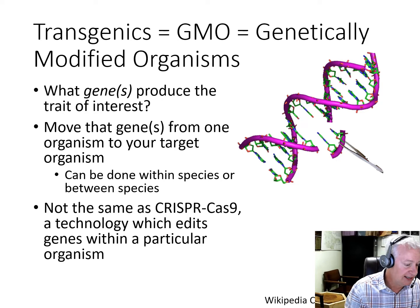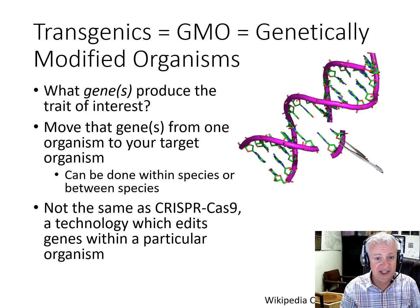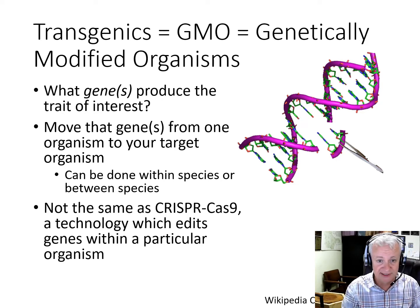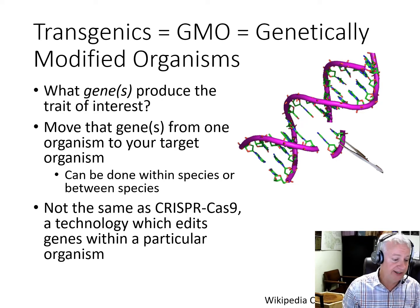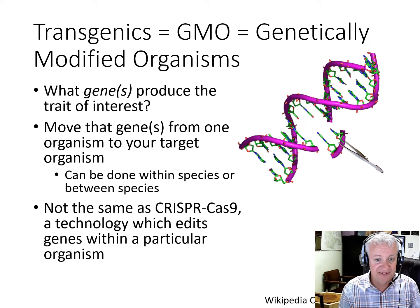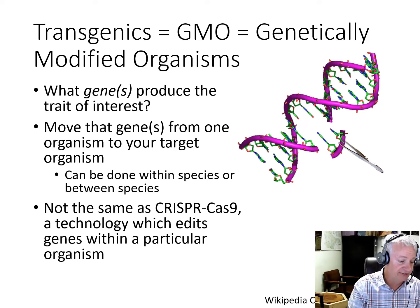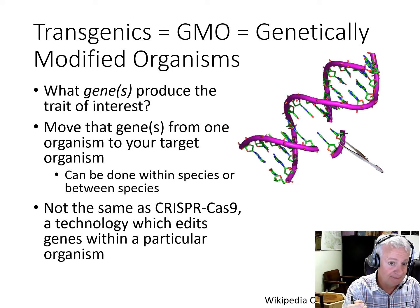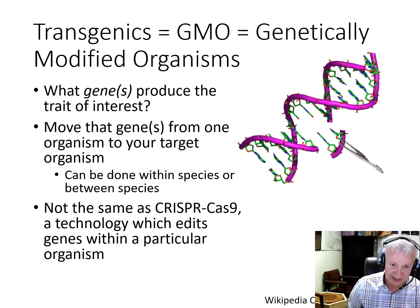This technology has been used a number of times in forest trees. Cold tolerance genes from Arabidopsis, an herbaceous plant, have been moved into eucalyptus to produce cold-tolerant eucalyptus. Glyphosate tolerance genes — glyphosate is Roundup, an herbicide — have been moved from bacteria species into poplars and many other species.